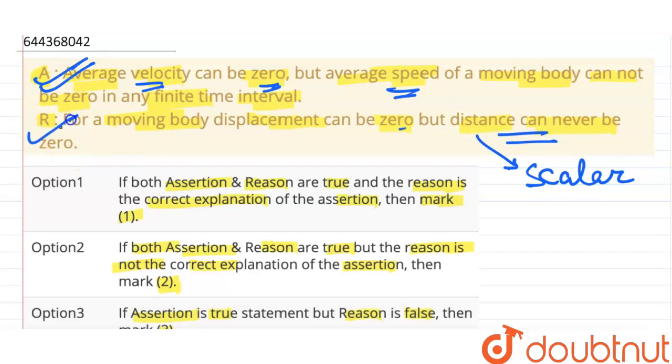So assertion is true, reason is true, and reason is the correct explanation of assertion. So option 1 is the correct answer. That's all, thank you.